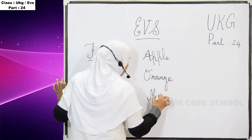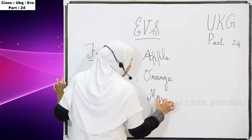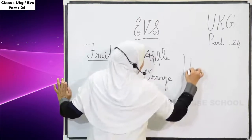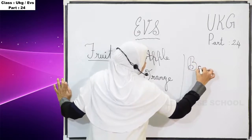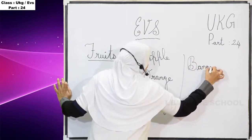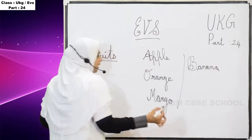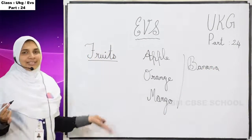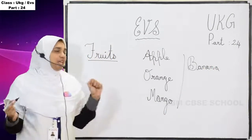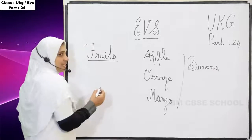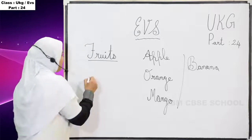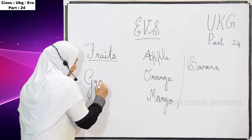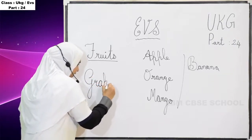Then mango and banana. Now we are going to write the name of another fruit — that is grapes. Can you say the spelling of the word grapes? G-R-A-P-E-S.